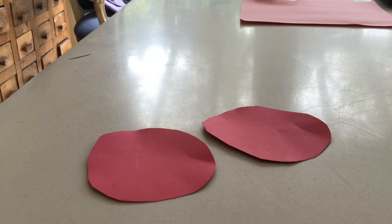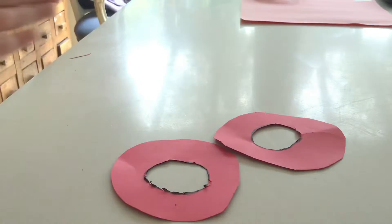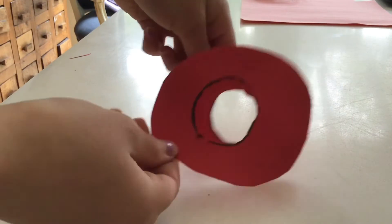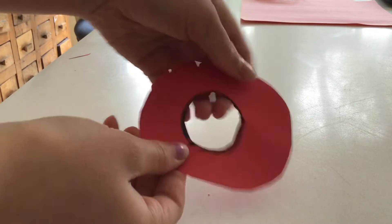Then you're going to want to cut out two of those. Then cut out circles in the middle of both of them, like this. Make sure they fit together.